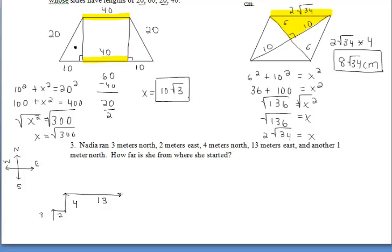And 1 meter north. In the end we want to figure out how far is she from where she started. Well she started right here and she ended up here. So we want to find the length of that segment. I'm going to draw in that segment using a red pen. Because we were working with those directions north and east we can actually create a right triangle.